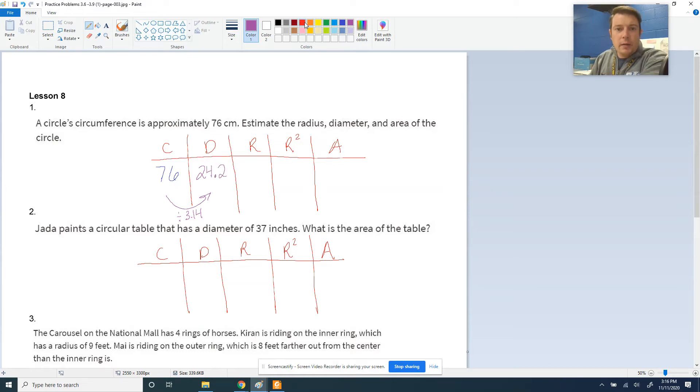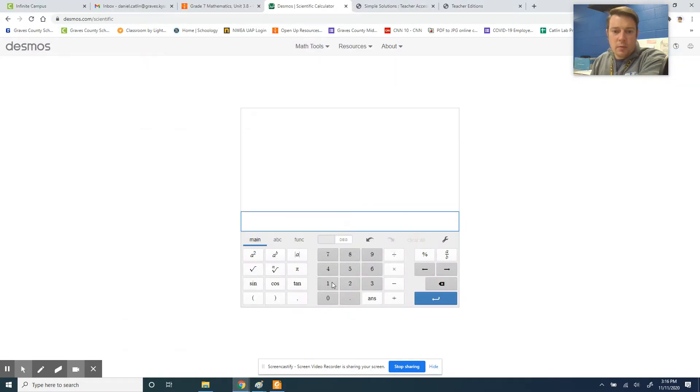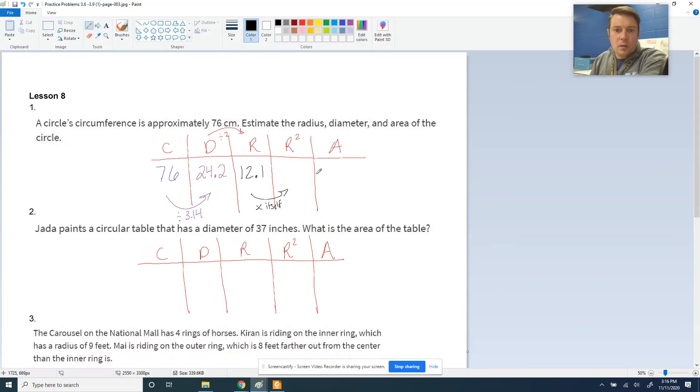Now our radius is half of that, so we've got to cut this in 2, and that gives us 12.1. Cut everything in 2, right? And then to get to the radius squared, we've got to multiply it by itself. So we do 12.1 squared. Let's go back here and do 12.1 multiplied by itself. That gives us 146.41.